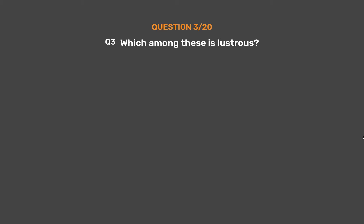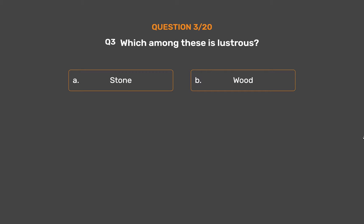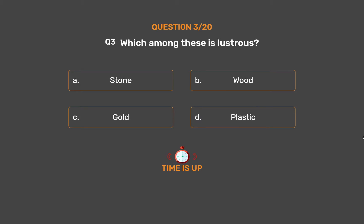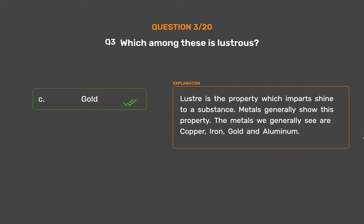Question number 3. Which among these is lustrous? Option A: Stone. Option B: Wood. Option C: Gold. Option D: Plastic. The correct answer is Option C, Gold. Lustre is the property which imparts shine to a substance. Metals generally show this property. The metals we generally see are copper, iron, gold, and aluminum.